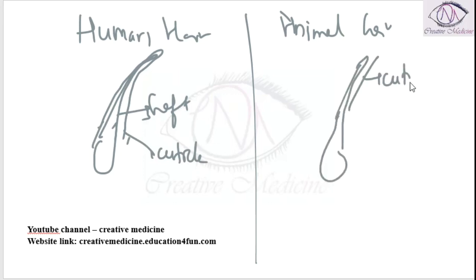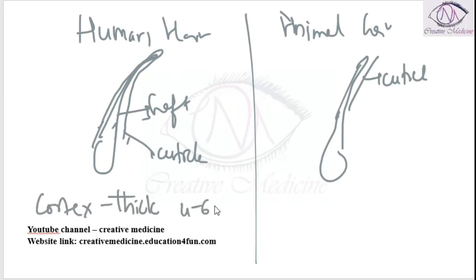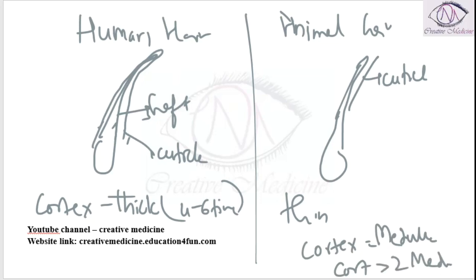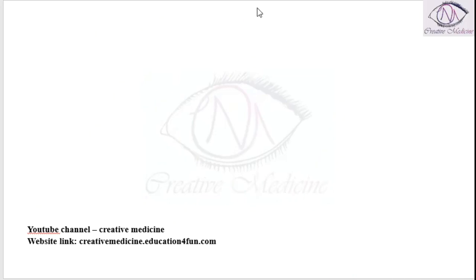The cortex is thick and 4 to 10 times bigger than the medulla in human hair, whereas the cortex is thin and the same size as the medulla in animal hair. Rarely is the cortex more than twice the medulla in animal hair.